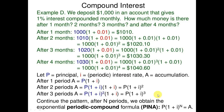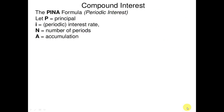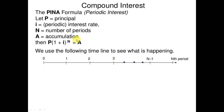The PINA formula: A = P into (1 + i) raised to power n, where P is the principal, i is the periodic interest rate, n is the number of periods, and A is the accumulation. We use a timeline to see what's happening: multiply by (1 + i) each period going forward.